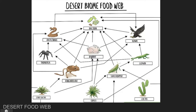Take a look at this food web. Who is consumed or eaten by the rabbit? If we follow this food web, we see that the rattlesnake and the hawk can both eat or consume the rabbit. In this food web, we see many different roles that are played.